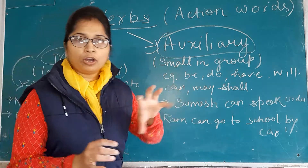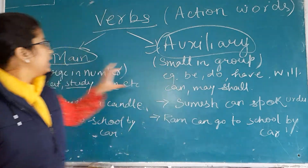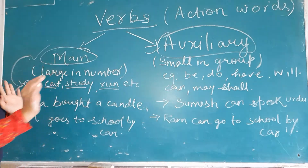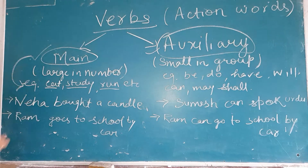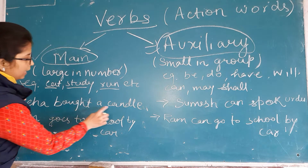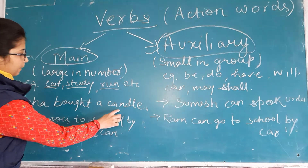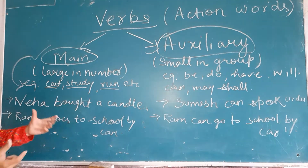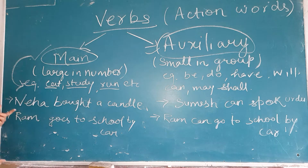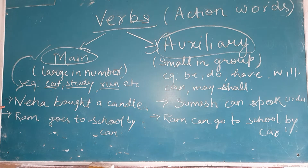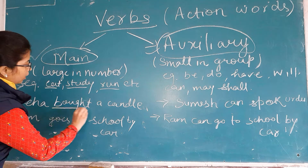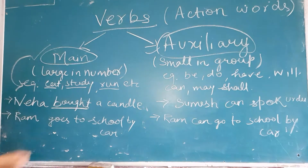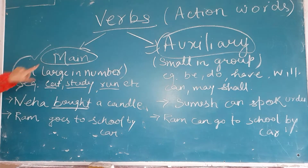These auxiliary verbs are small in group and main verbs are large in group. For example, 'Neha bought a candle.' Neha kya ki? Candle in kya hai. So here, 'bought' is a main verb.